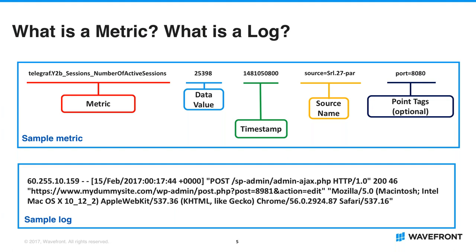Let me start with some basics before we dive into more comparative analysis. A metric is a number that describes a measurement of a variable in time. In our Wavefront metric format, you have the name of the measured variable, the value of measurement, and the time of measurement as described by the timestamp. You also have the source, which refers to where you are measuring, as well as tags, which help you organize your metrics. Tags can refer to container ID, port ID, or others. Because metrics are essentially numbers, they are perfect for applying aggregations and mathematical transformations.